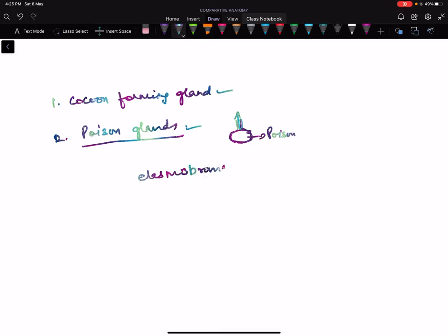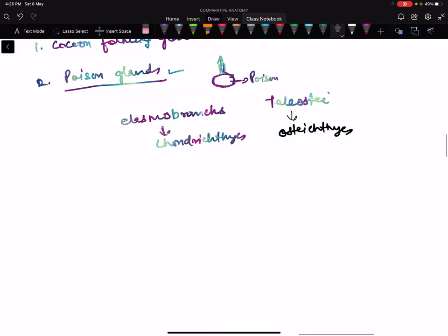The fish releases poison outside through this duct. There are some fishes like elasmobranchs, which are chondrichthyes, and teleosts, which are osteichthyes class.